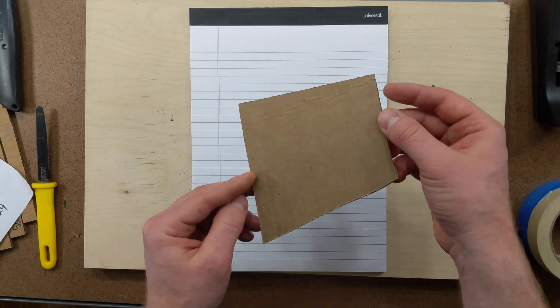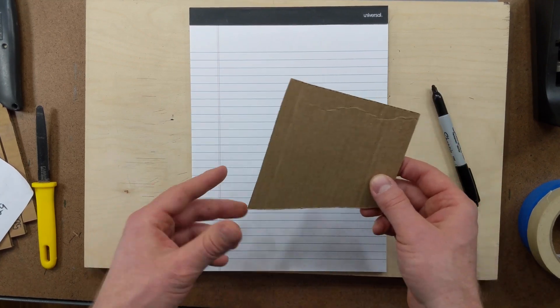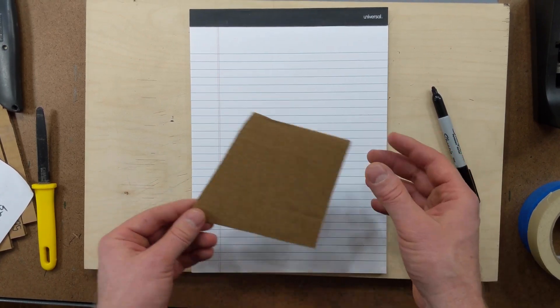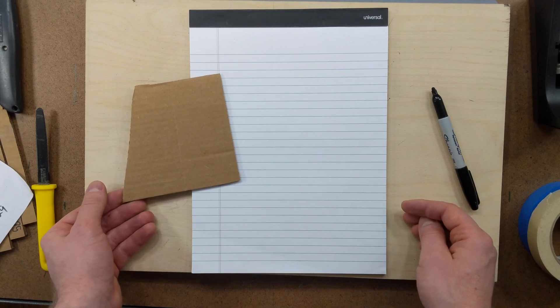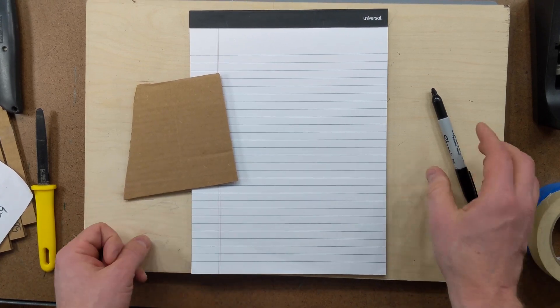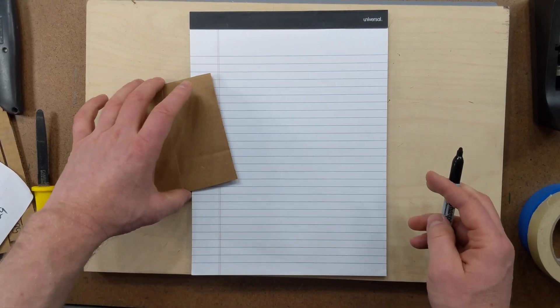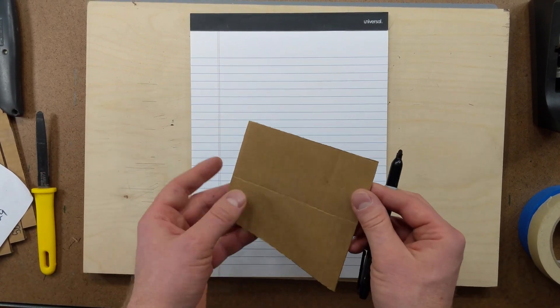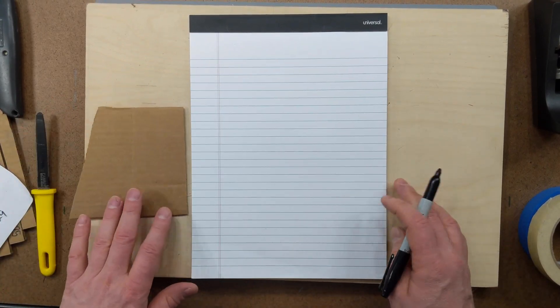But we want to have an accurate model when we make it out of cardboard, so it's a good representation of our design. So how do we do that? The best way to do this is to use a scale factor between the plywood and your cardboard. How do we come up with a scale factor?